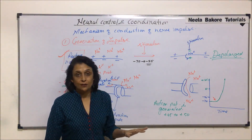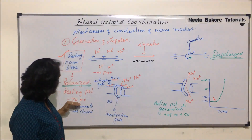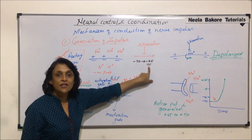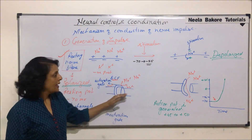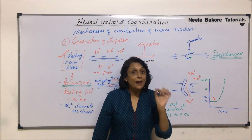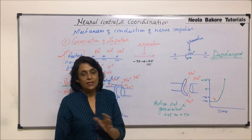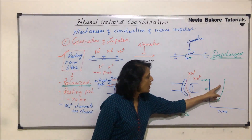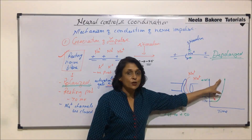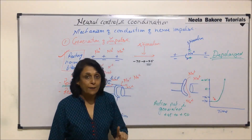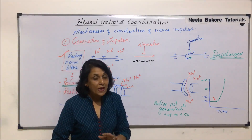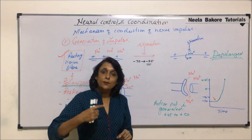All channels work at specific potentials. At minus 70 millivolts, sodium channels remain closed. At minus 55, sodium channels open. After minus 55, the potential rises to zero and then to plus 45, at which point all sodium channels close. As the potential increases above zero and becomes positive, sodium channels start to close down and potassium channels start to open up. At plus 45, all sodium channels are closed and all potassium channels are open, ready to pump potassium ions out.